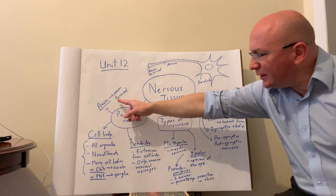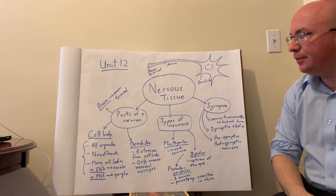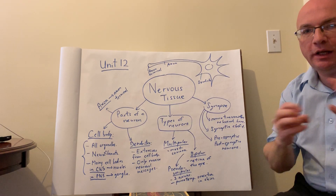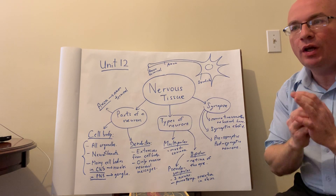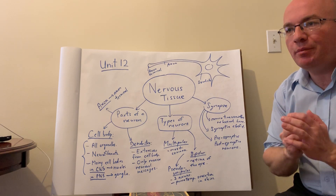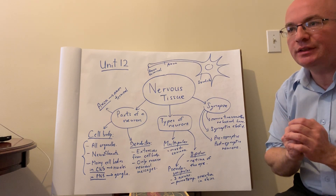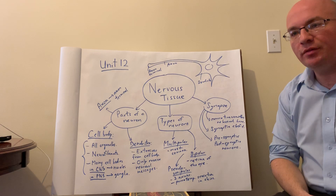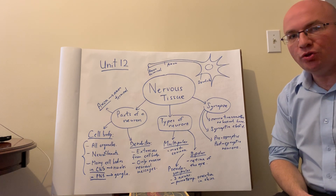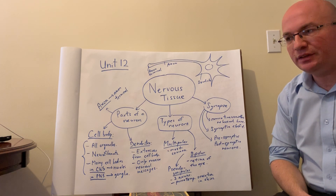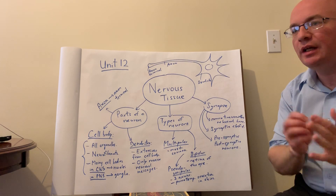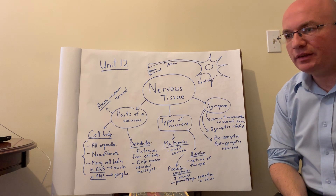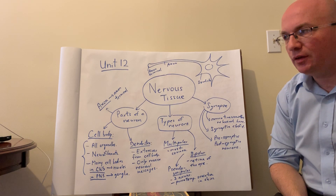The axon terminal is the portion that has the synapse — that connection where the chemicals are finally released. They will bind to the receptors on the other end, either on another neuron, a muscle cell, or something else, and then that will activate and send that signal to the next cell.